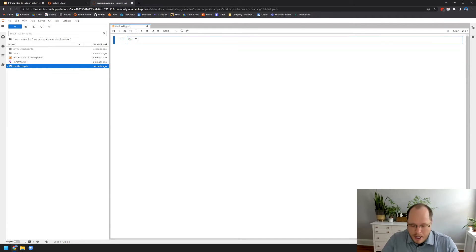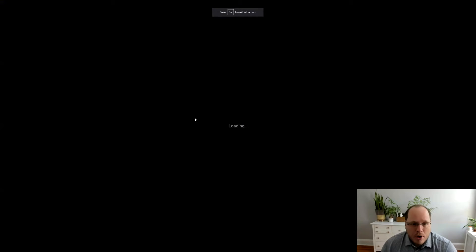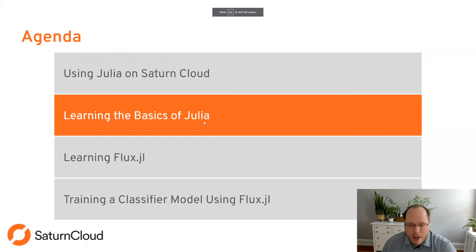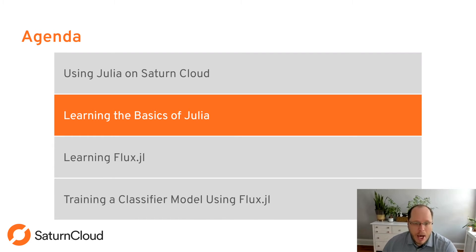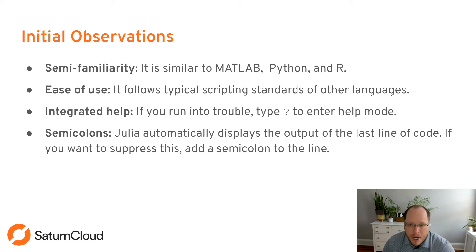You can type whatever you want in the notebook — for example, a number plus one and hit Shift+Enter, and it'll give you an answer. We're going to learn the basics of Julia, starting from variables and basic arithmetic, all the way up to training a classifier model using machine learning. Julia is very similar to MATLAB — I find it most similar to MATLAB — but also similar to Python and R. If you're familiar with any of those languages, you should be able to jump right in with a few syntax changes.